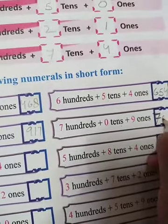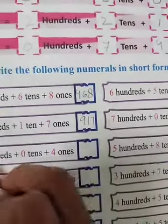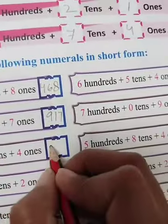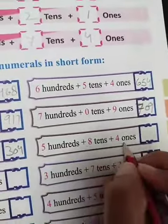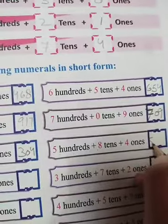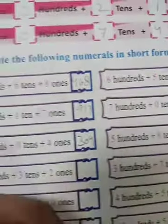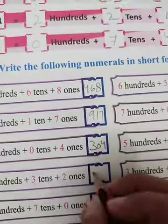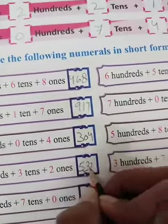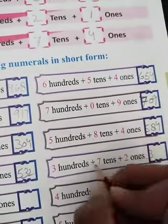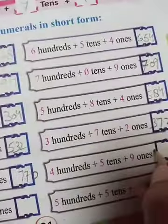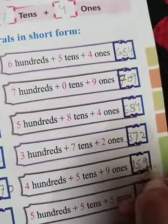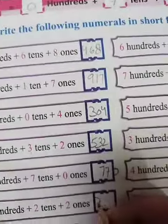Seven hundreds, 0 tens, and 9 ones — you will write 709. Three hundreds, 0 tens, and 4 ones — three hundred four, 304. Five hundreds, 8 tens, and 4 ones — five hundred eighty-four, 584. Five hundreds, 3 tens, and 2 ones — 532. Three hundreds, 7 tens, and 2 ones. Seven hundreds, 7 tens, and 0 ones. Four hundreds, 5 tens, and 9 ones.